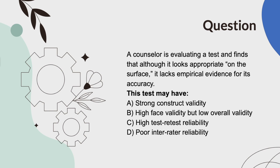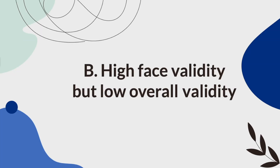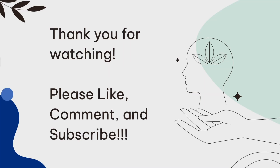A counselor is evaluating a test and finds that although it looks appropriate on the surface, it lacks empirical evidence for its accuracy. This test may have... A, strong construct validity. B, high face validity but low overall validity. C, high test-retest reliability. Or D, poor inter-rater reliability. And the answer is B, high face validity but low overall validity.